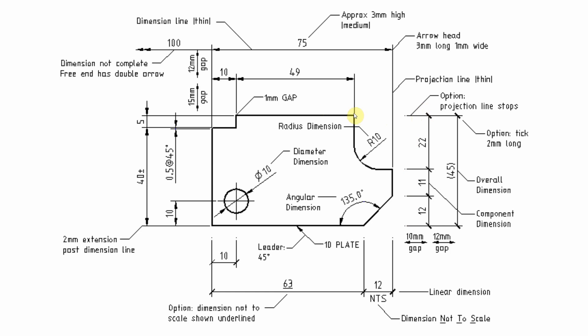Now the other end of the projection line is normally two millimetres past the dimension line. So that bit, this, this here is the dimension line. This one, these are dimension lines. So that line, projection line, extends two millimetres at one to one past that dimension line. Similar here.